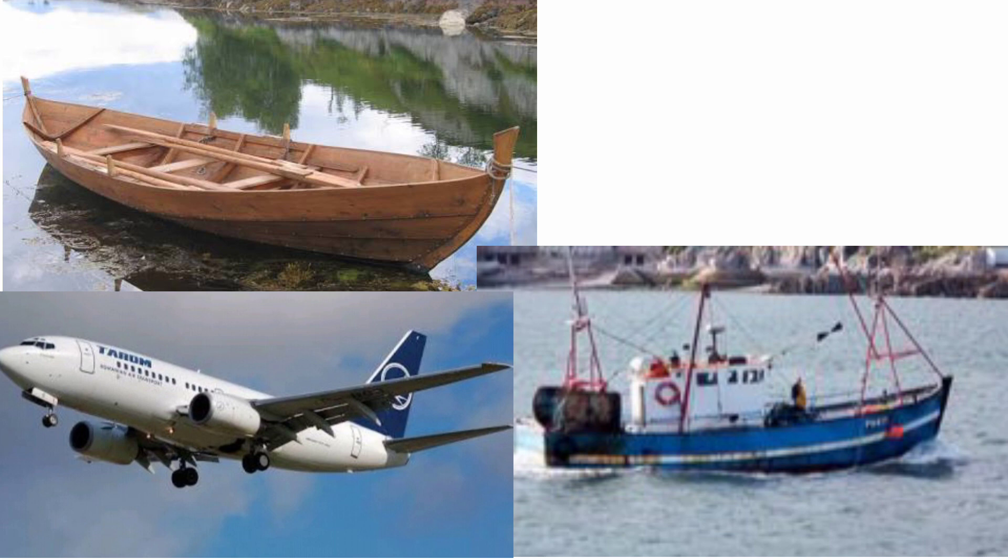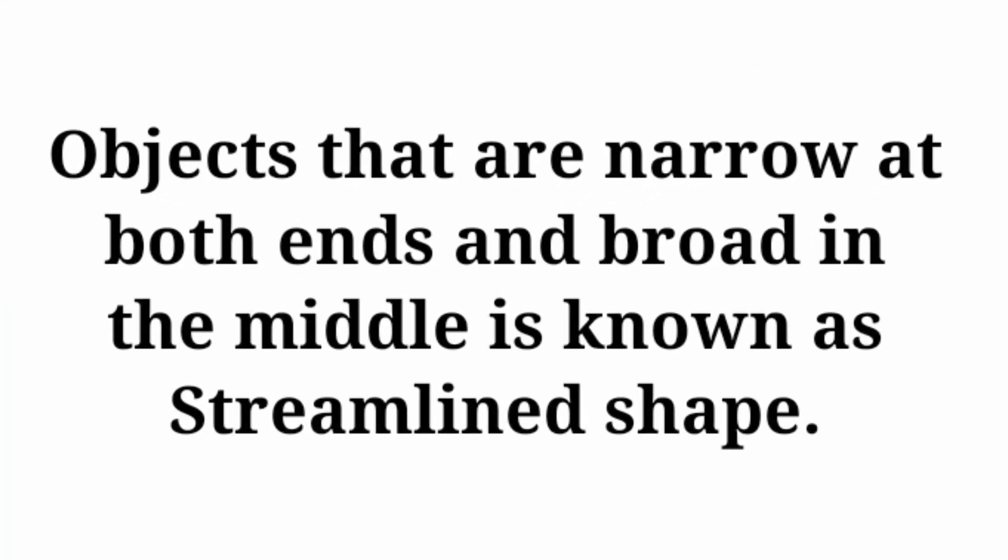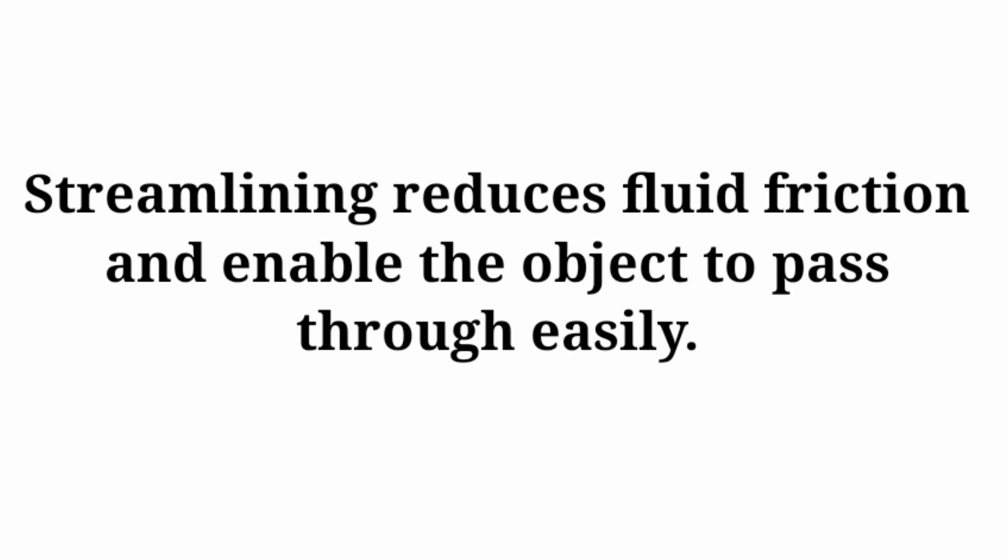This particular shape is known as a streamlined shape. Objects that are narrow at both ends and broad in the middle is known as streamlined shape, and streamlining reduces fluid friction and enables the object to pass through easily.